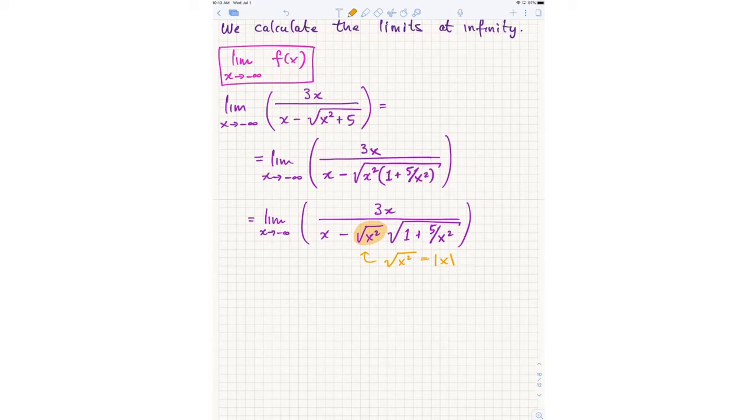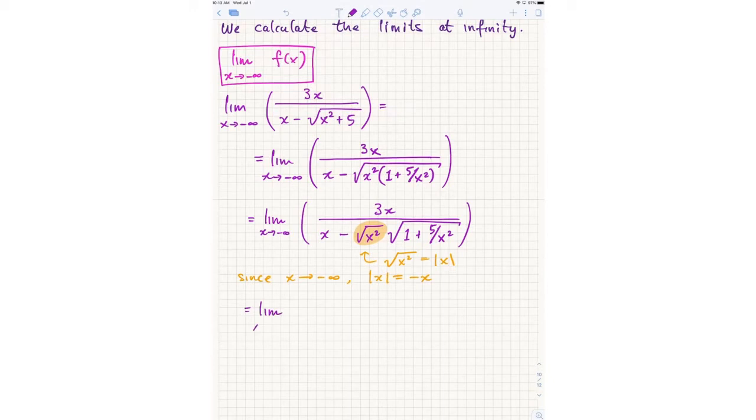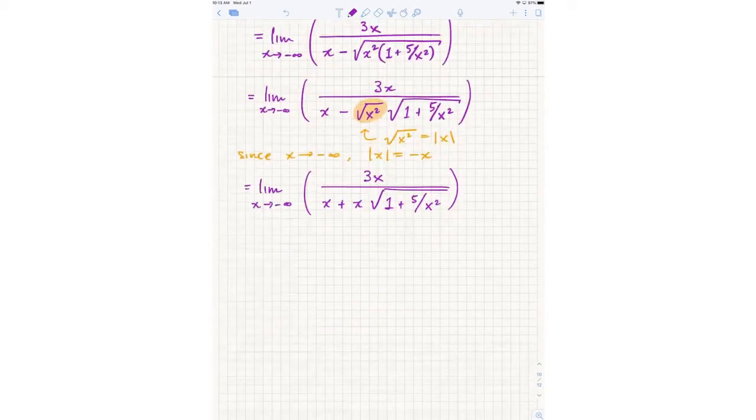And then what Armand said: because of the negative infinity we can assume that x is negative. So since x is going to negative infinity, absolute value of x is actually equal to negative x. So putting those two steps together, if this is actually negative x, there's already a minus sign there, so I really get x plus x times this square root.